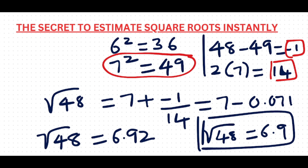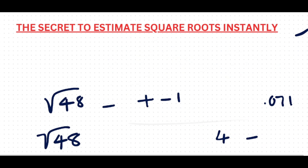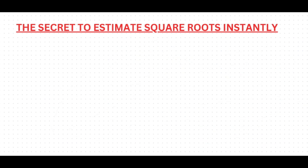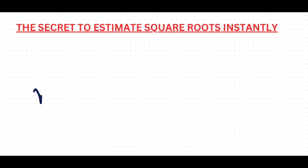So you can see we subtracted here — sometimes we add and sometimes we subtract; it depends on the numerator value. Now let's do the next question: finding the square root of 79. 79 is also not a perfect square, so let's find its square root using the same method.